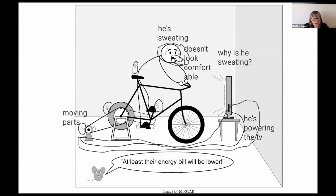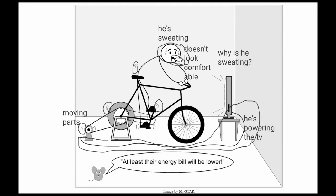Sherry noticed the mouse — the mouse tells us this will help with the energy bill. Larry, what connection did you have to make to understand what the mouse is saying — that at least their energy bill will be lower? Larry said it was something about energy, so he knew it had to do with electricity. Right away, you have the life schema that an energy bill usually means what you get charged for electricity by the electric company.